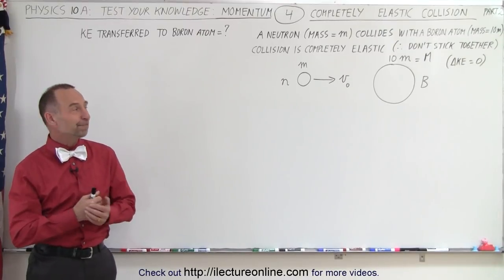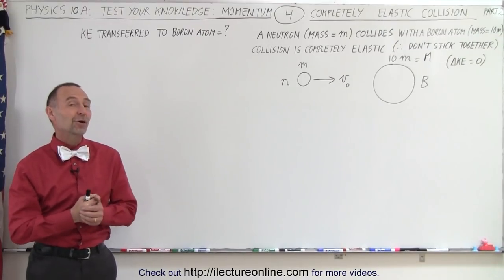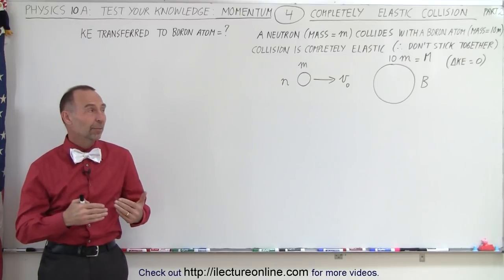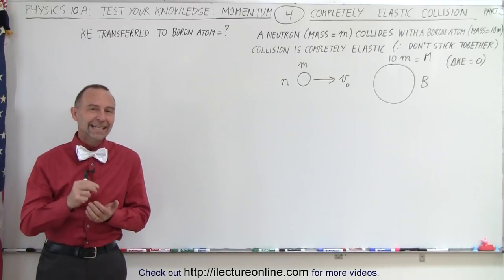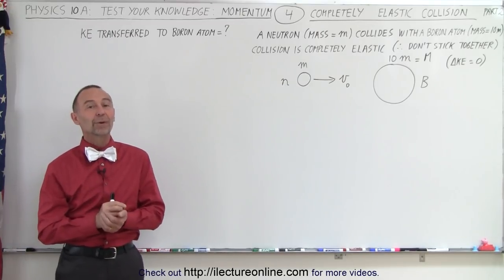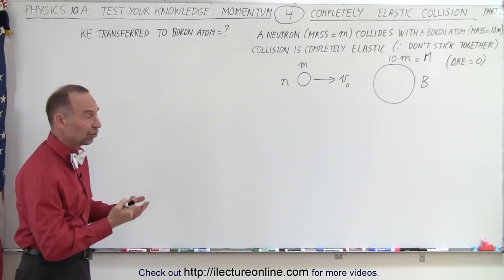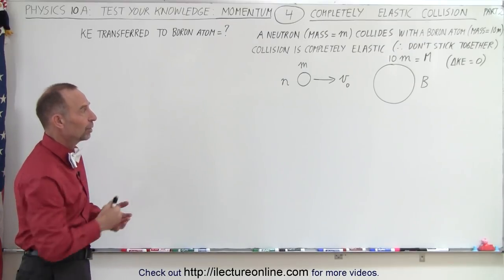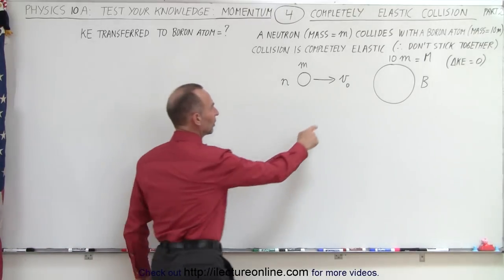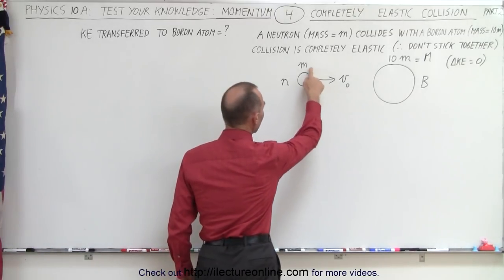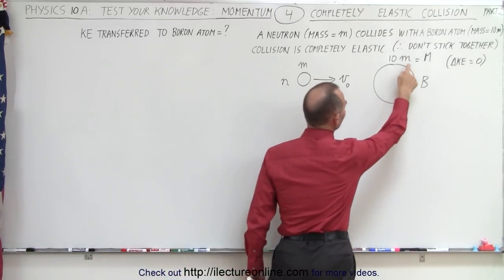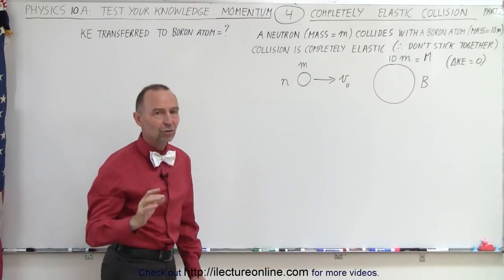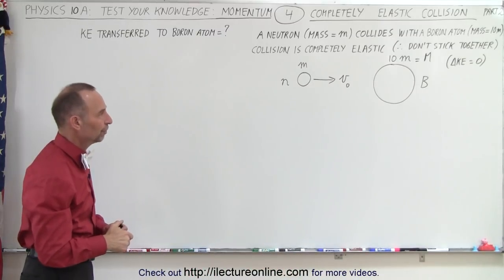Welcome to my lecture online. In this video we're going to do the same problem as before, but instead of having a completely inelastic collision, we have a completely elastic collision. It's a neutron that collides with a boron. The neutron has some initial velocity with mass m. The boron has 10 times the mass of the neutron, and it has no motion before the collision.